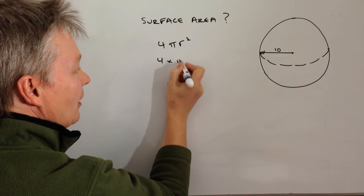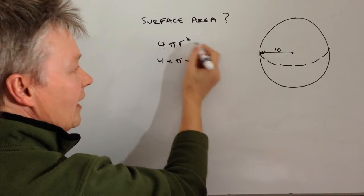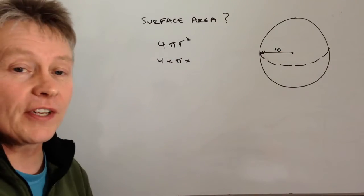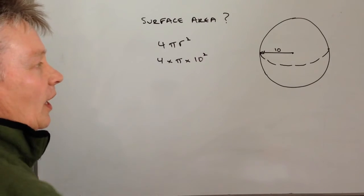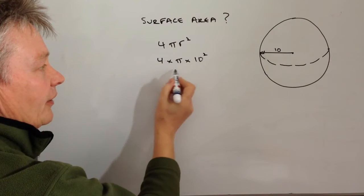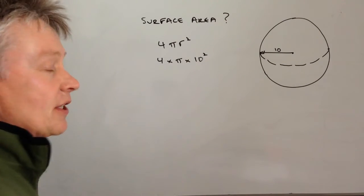We've got 4 times π times the radius squared. Well, the radius on this particular ball is 10 centimeters, so I'm going to square it. That means if I work that out, it's going to be 4 times 100.